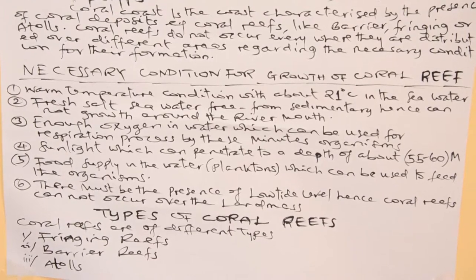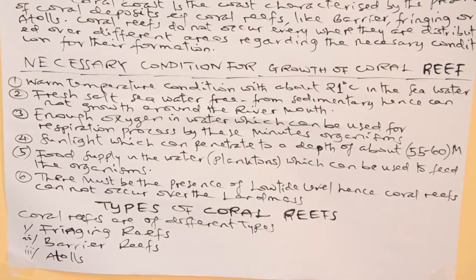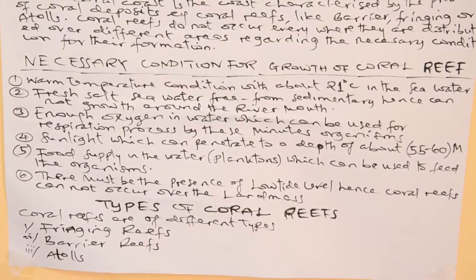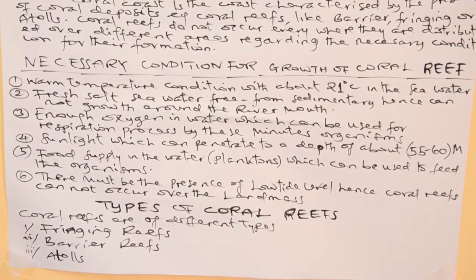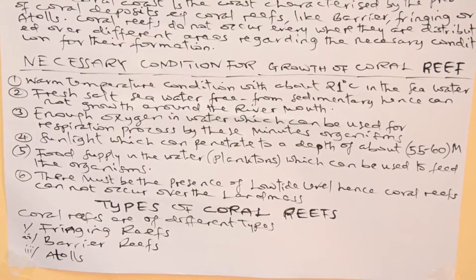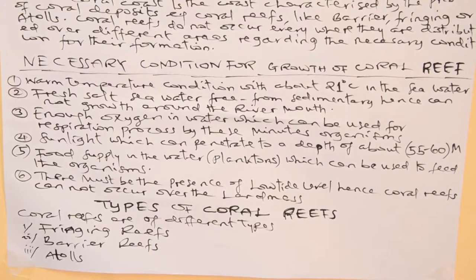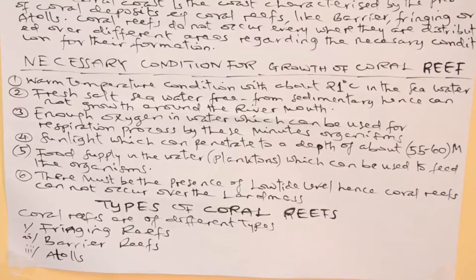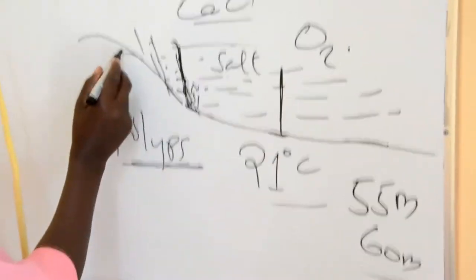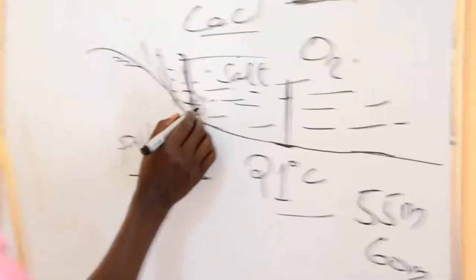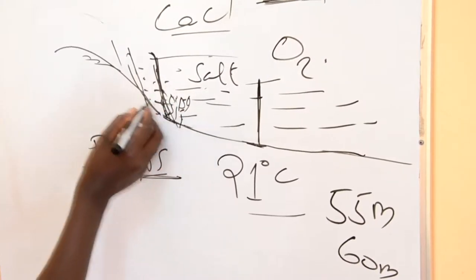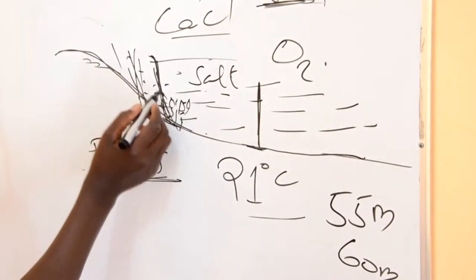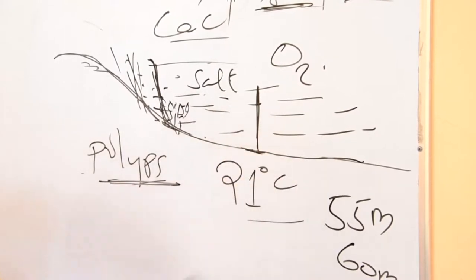Another condition for the growth of these coral reefs is the presence of low tide level — hence coral reefs cannot occur over the landmass. Therefore, you have to remind yourself it is not taking place in the area of landmass. It just takes place nearby the coast but within water bodies. This organism is not living out of water bodies; it is just growing mostly in water bodies nearby the coast, because it cannot be grown in the middle of the ocean due to the deepness of that area.